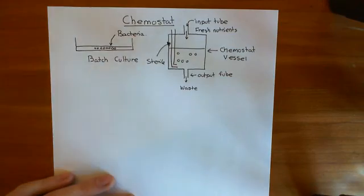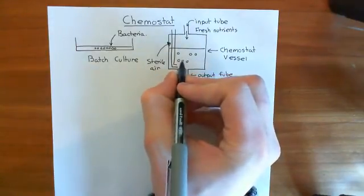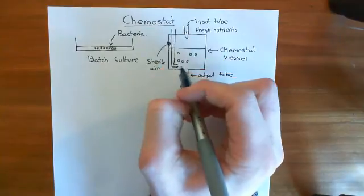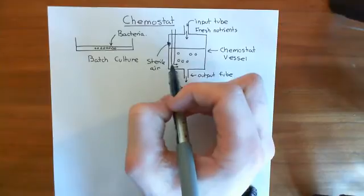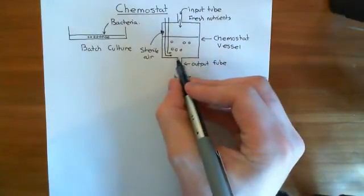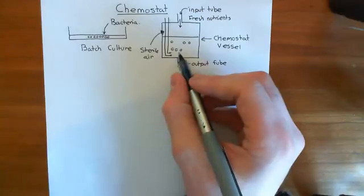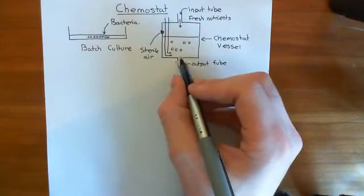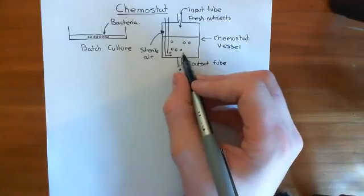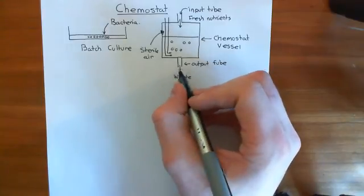This tube brings in sterile air. The bacteria respire, so they need oxygen in order to respire — well, aerobic bacteria do. If they're anaerobic, then you obviously wouldn't be bringing in fresh air. But for aerobic bacteria, you definitely do need a tube bringing in fresh air to provide them with oxygen. Now, I've drawn the output tube very large, and bacteria would be able to slide through that — you don't want that. You don't want your bacteria falling out of this output tube. So you put a little filter here so that the waste materials can leave through the output tube, but the bacteria themselves aren't going to fall out of the chemostat vessel.